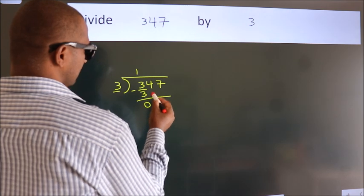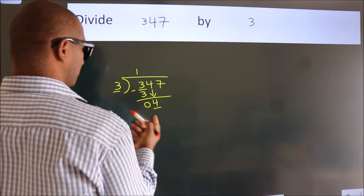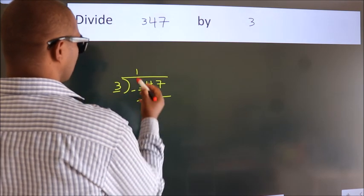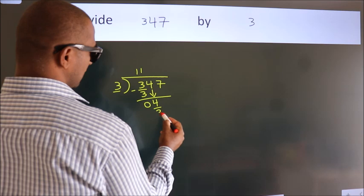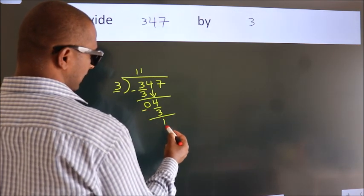After this, bring down the beside number. 4 down. A number close to 4 in the 3 table is 3 once 3. Now we subtract. We get 1.